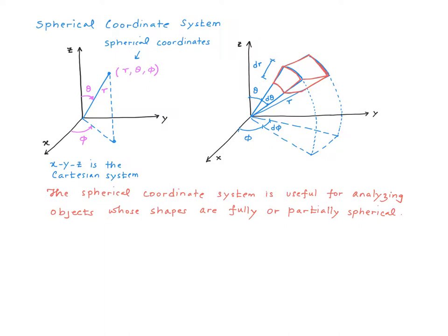The spherical coordinate system is embedded within a Cartesian coordinate system x, y, z. Say I have this point in space. I project it down to the x-y plane and then connect this point to the origin. Also, I connect this point to the origin.